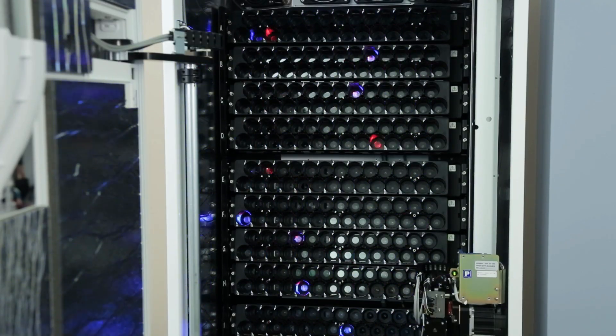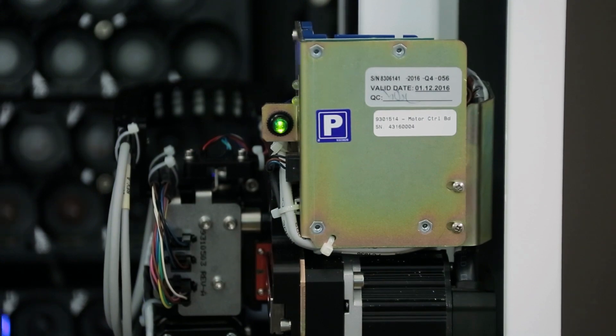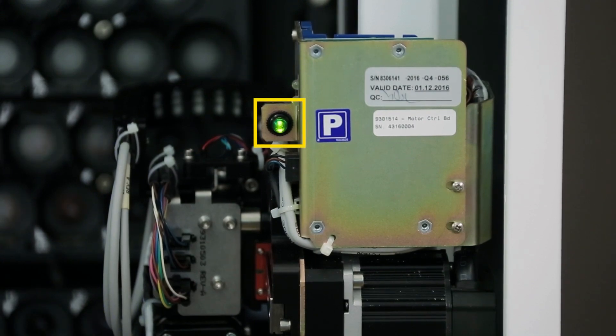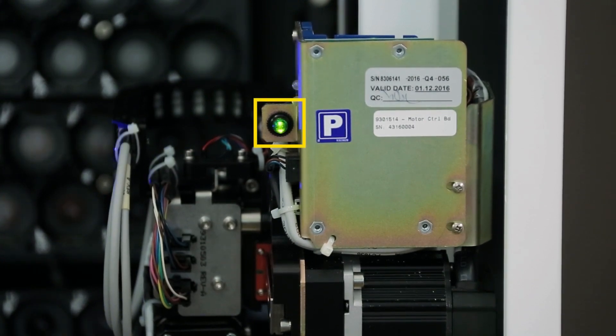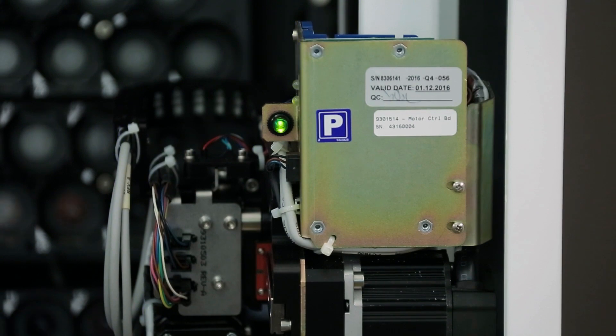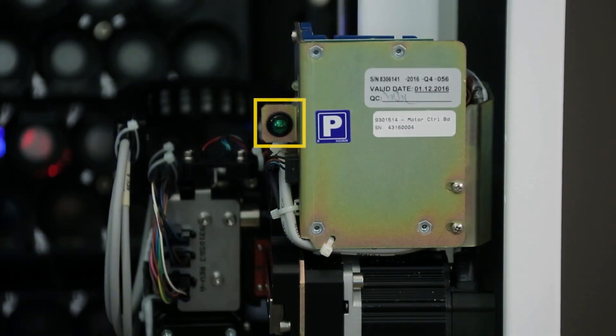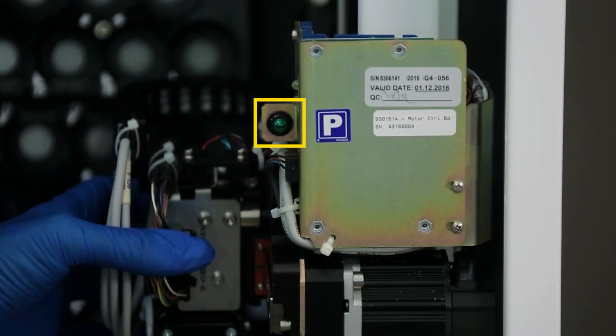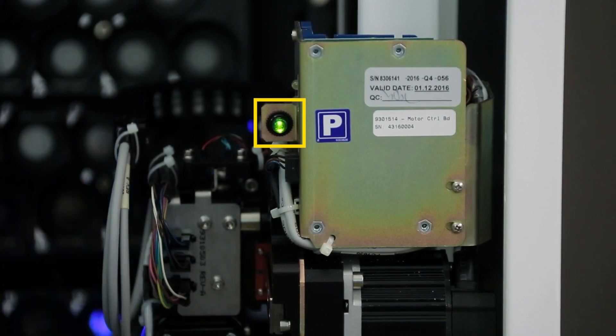Closing the BACT/ALERT VIRTUO door. Before closing the door, check that the green LED is illuminated on the robot gripper. This is the safe to move sensor on the robot gripper that alerts the user that the gripper is in a safe position. If the green light is not on, you can attempt to manually move the gripper into a safe position.